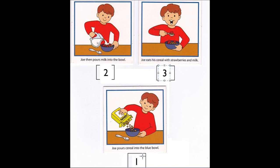So we have one: Joe pours cereal into the blue bowl. Two: Joe then pours milk into the bowl. And three: Joe eats his cereal with strawberries and milk. You have just put all these pictures in order. Very good work, boys and girls.